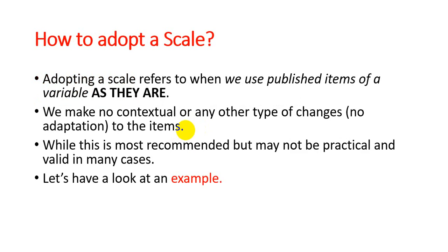Adapting a scale refers to when we use published items of variables as they are — meaning we do not make any contextual or lexical changes. When we do not make any changes in an available scale and use it as-is, we call it adoption of a scale. This is the most recommended approach, but in many ways it may not be practical and may also lead to invalid findings if we adopt a scale knowing it doesn't fully fulfill the objective of our research.